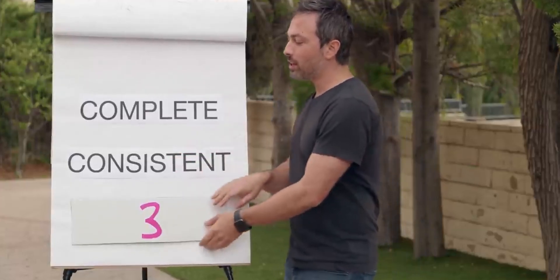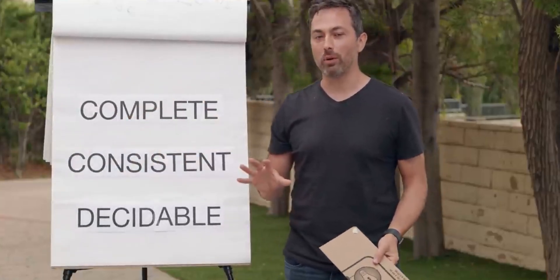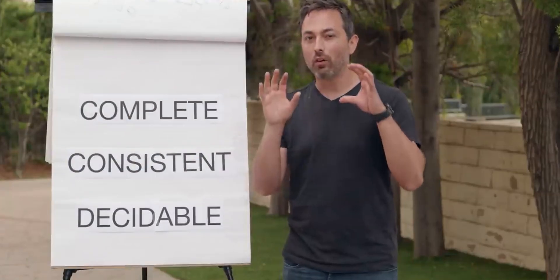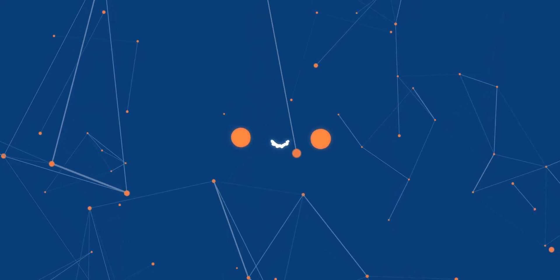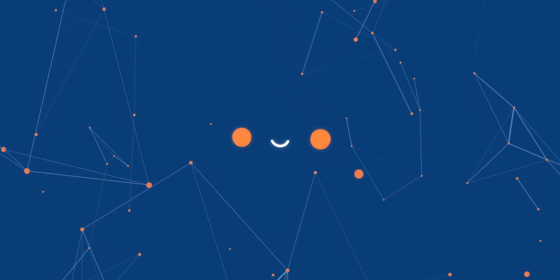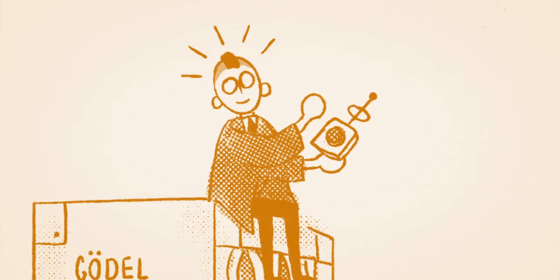And number three, is math decidable? Meaning, is there an algorithm that can always determine whether a statement follows from the axioms? Given what we learned earlier about the trilemma, you might already have a hint at what the answers to these questions are, just like Kurt Gödel did. Gödel had an idea.